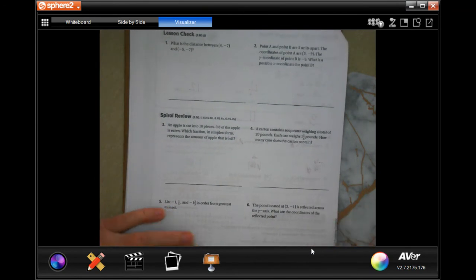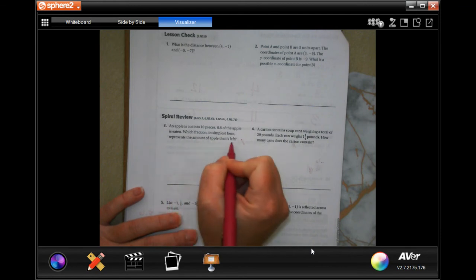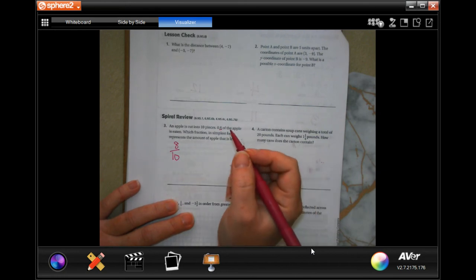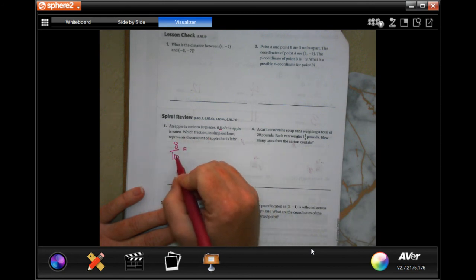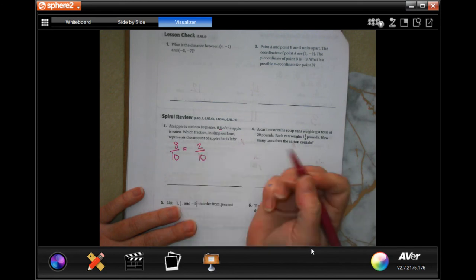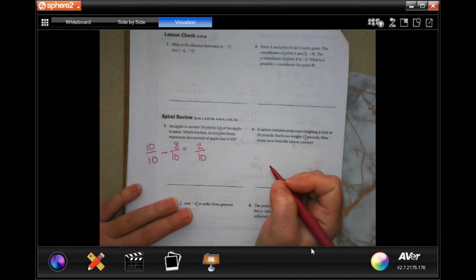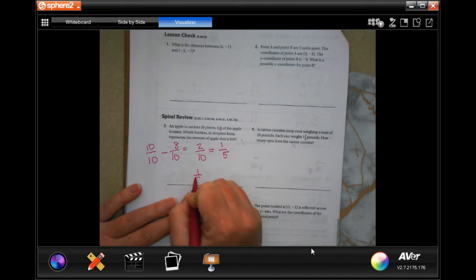We are going to do this spiral review. If an apple's cut into ten pieces and an eighth of the apple is eaten, what fraction in simplest form represents the amount of apple that's left? Well, the apple's cut into ten pieces, that eight is in the tenth spot which means it's over ten. Eight over ten is how much is eaten, which means that ten over ten minus eight over ten is going to be two over ten. Now in simplest form, if I divide both of those by two, I get one fifth.